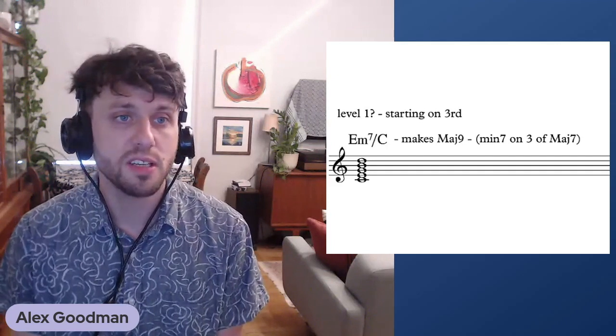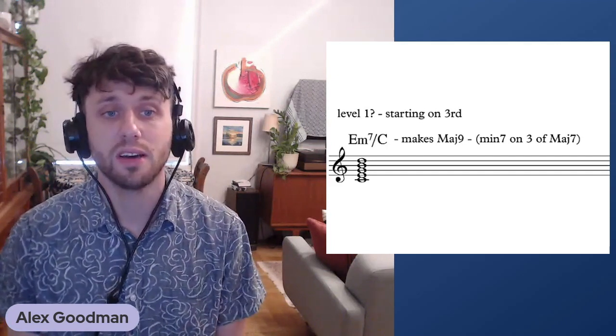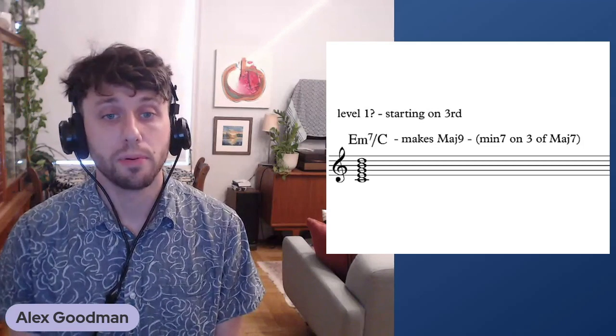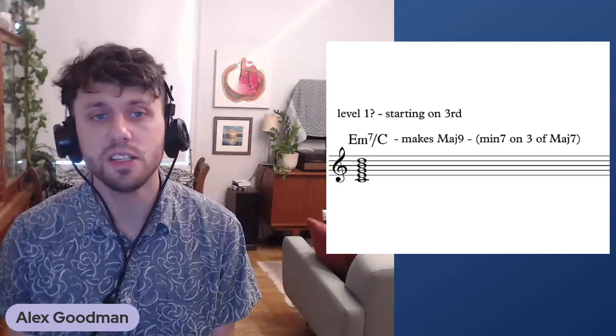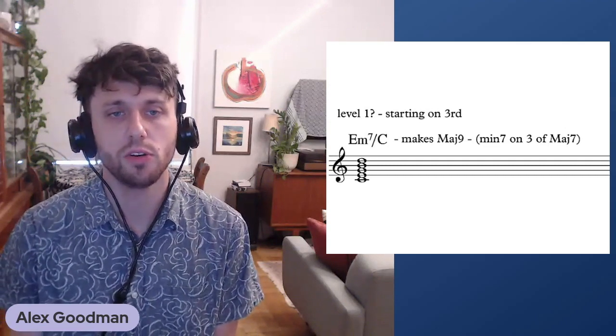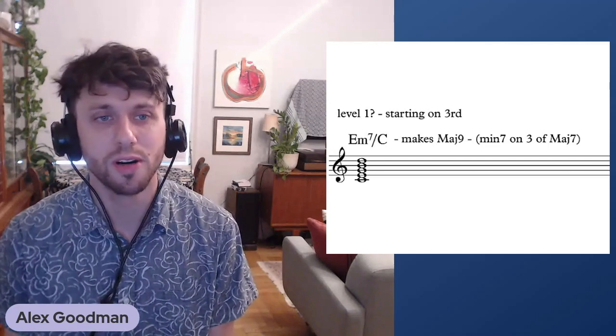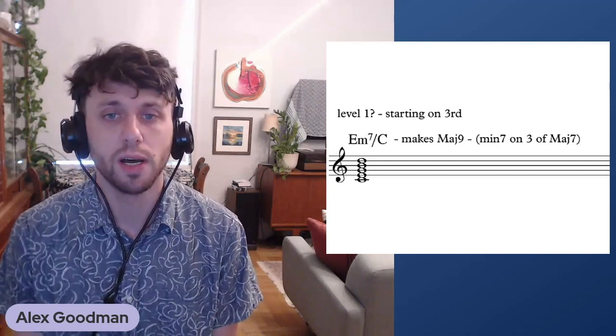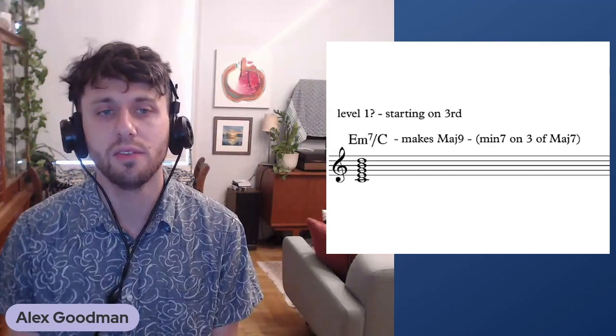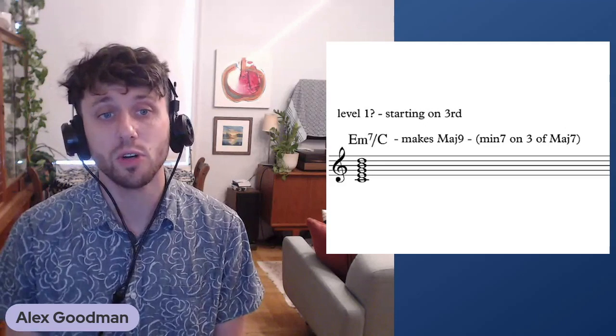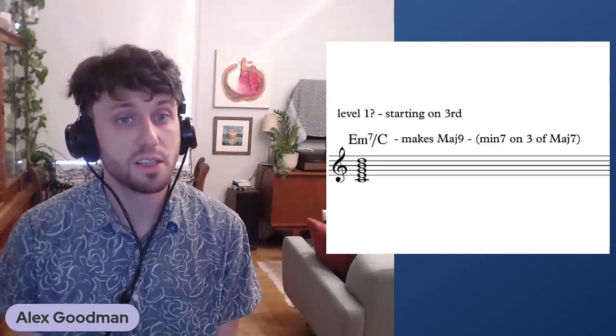So maybe the first level, a very common superposition: what if we put E minor seven over C? That's one of those five basic chords. E minor seven over C—all of a sudden, you have a major nine sound. Every time you see a C major seven, you could think about playing a minor seven or arranging a minor seven up a third from the root.